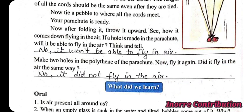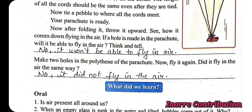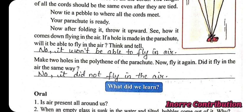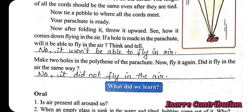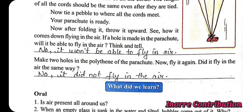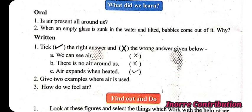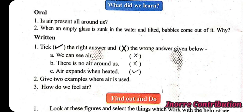If a hole is made in the parachute, will it be able to fly in the air? Think and tell — no, it wouldn't be able to fly. Make two holes in the polythene of the parachute and fly it again. Did it fly the same way? No, it did not fly in the air the same way. Now tick the right answer and cross the wrong answer.